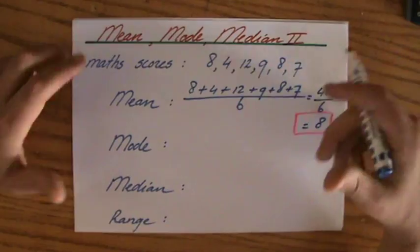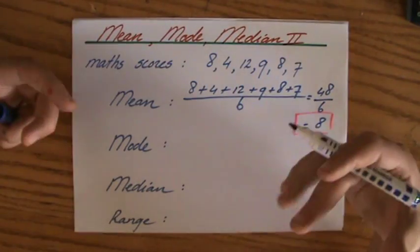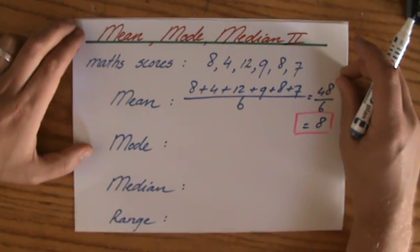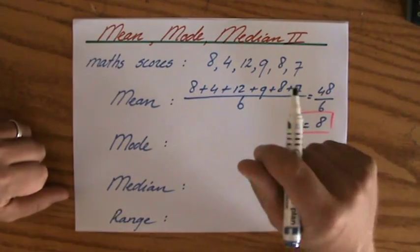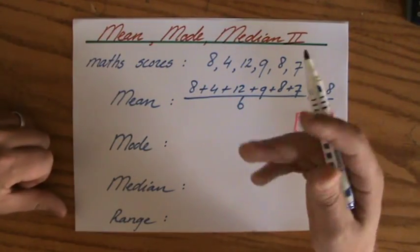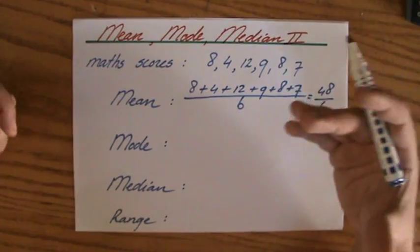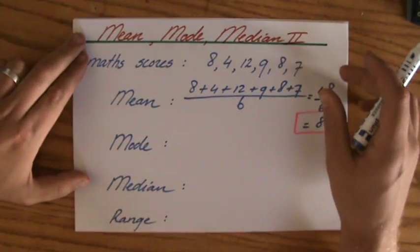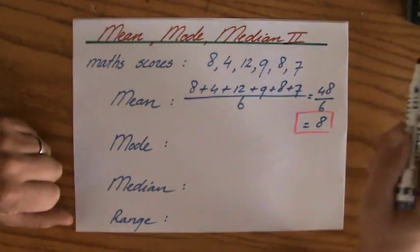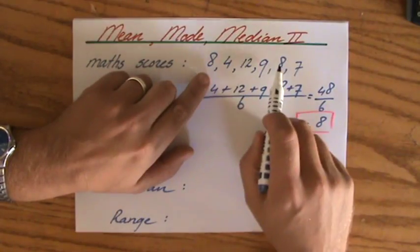Okay, now what about the mode? The mode we said is the most popular, if you like, piece of information, that piece of information that occurs most frequently. And sometimes I've said there's no mode, and sometimes you have two modes, that's all perfectly fine. But now, which one is most popular? That is the 8.